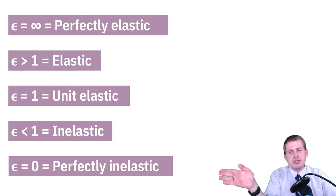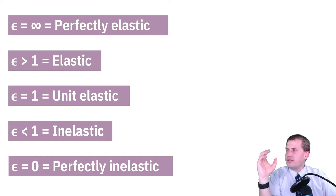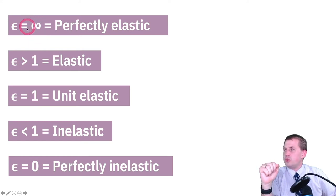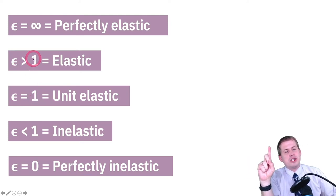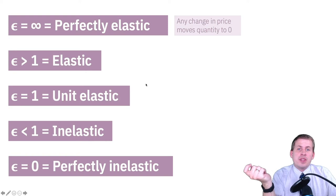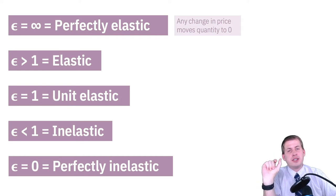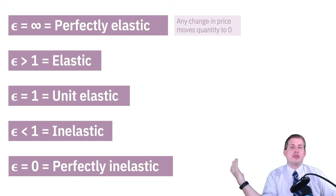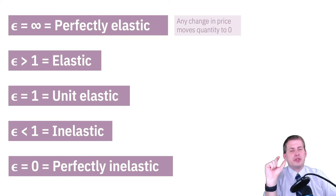Elasticity scores range from zero to infinity — they don't go negative. Everything is centered around one: if something is greater than one it's elastic, if it's less than one it's inelastic. If something is perfectly elastic, any change in price will move the quantity to zero. If the price goes up by one percent, the quantity disappears completely — it drops to negative infinity percent.